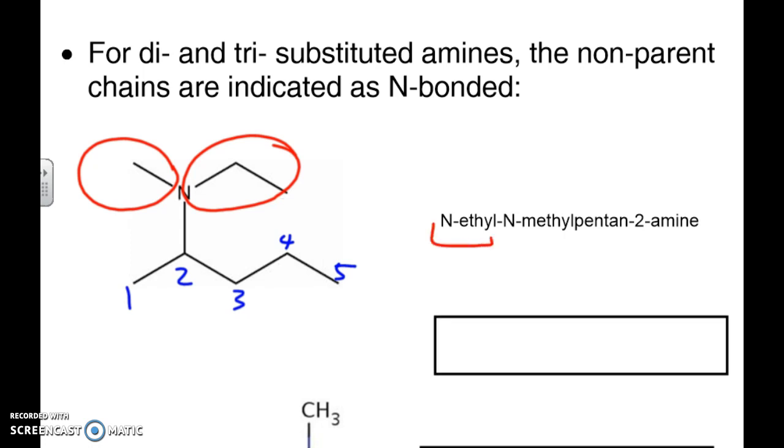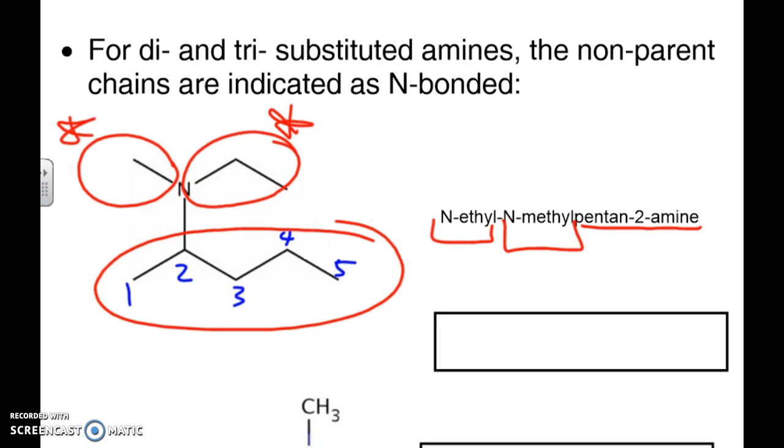So we're going to have N-ethyl, which is this piece right here, and then we're going to have N-methyl, which is this piece right here. And then the pentan-2-amine implies that this is our main chain which is attached to this nitrogen group. So we put N in there to imply this.